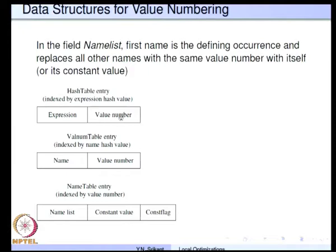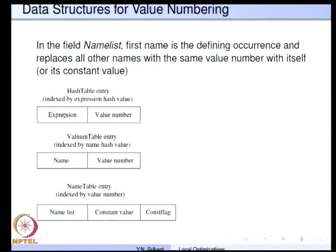The first one is the hash table entry. The table will have records where the first field is the expression itself and the second field is the value number. We compute a hash value for the expression using a suitable hashing function. The hashing function must take into consideration not only the two operands of the expression, but also the operator itself. Once we get a hash value we search the hash table and insert the expression along with a unique number called the value number. We are going to assign value numbers using a counter.